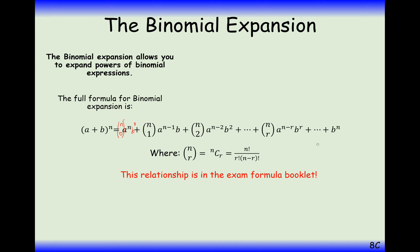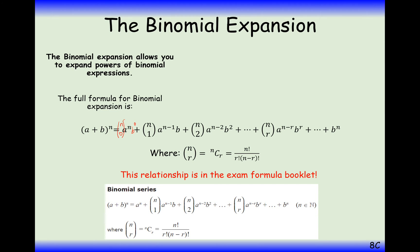This formula is in the formula booklet so you don't have to remember it off by heart, but it's good to know how it's going to be used. Here is exactly how it's phrased in the formula booklet. The reason it requires n to exist in the natural numbers is because we're not yet working with powers like a half or 5 over 2.